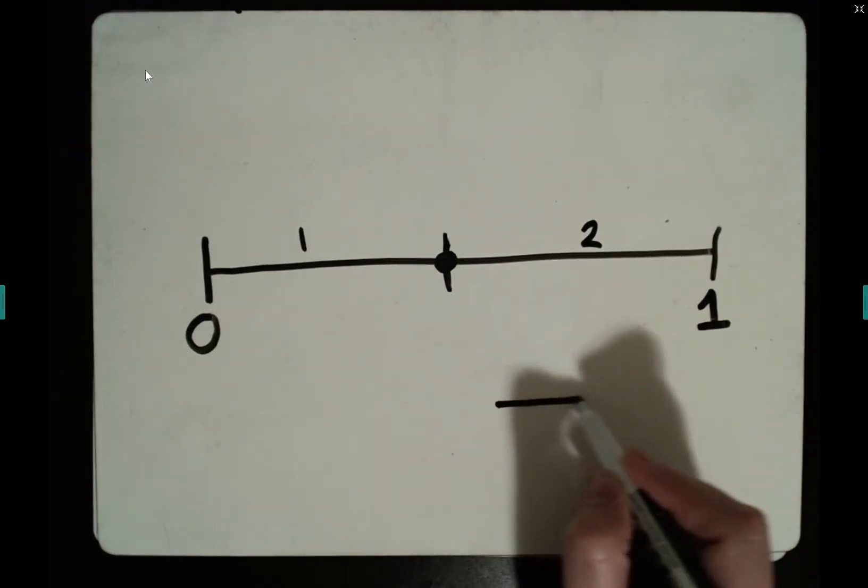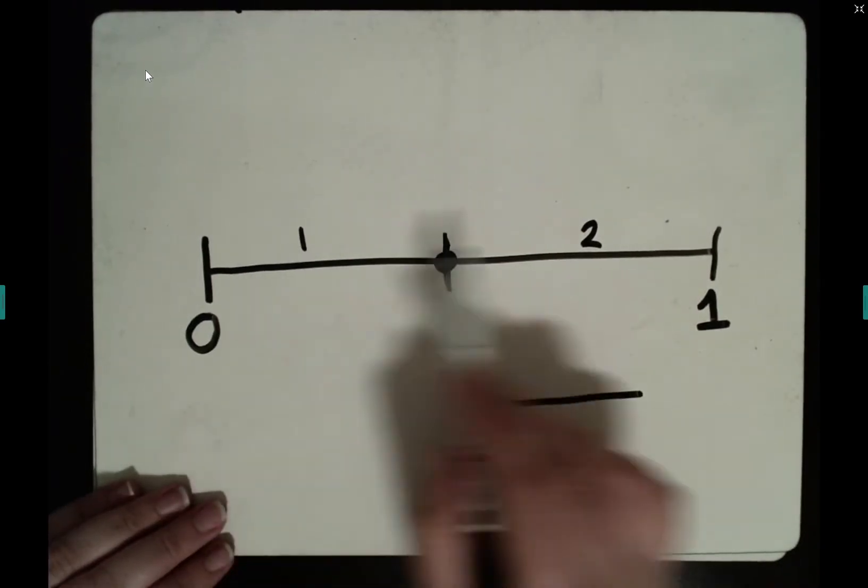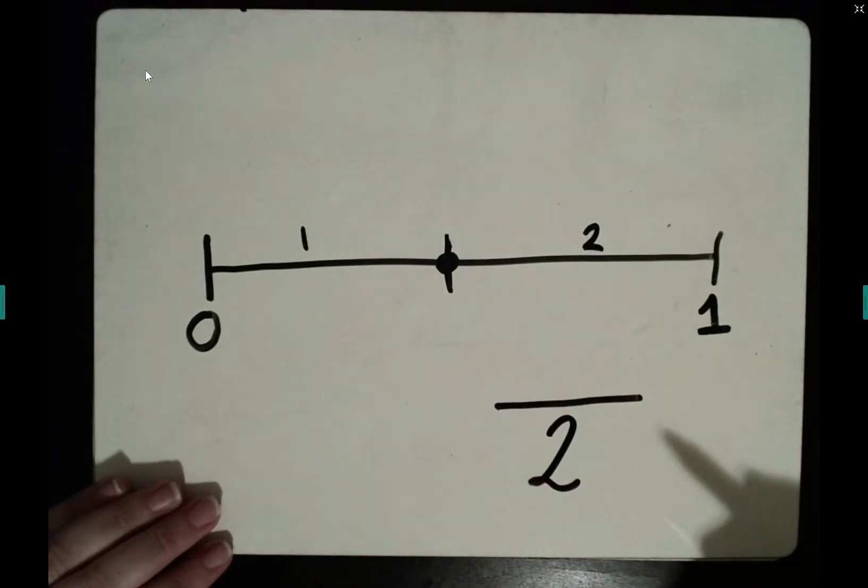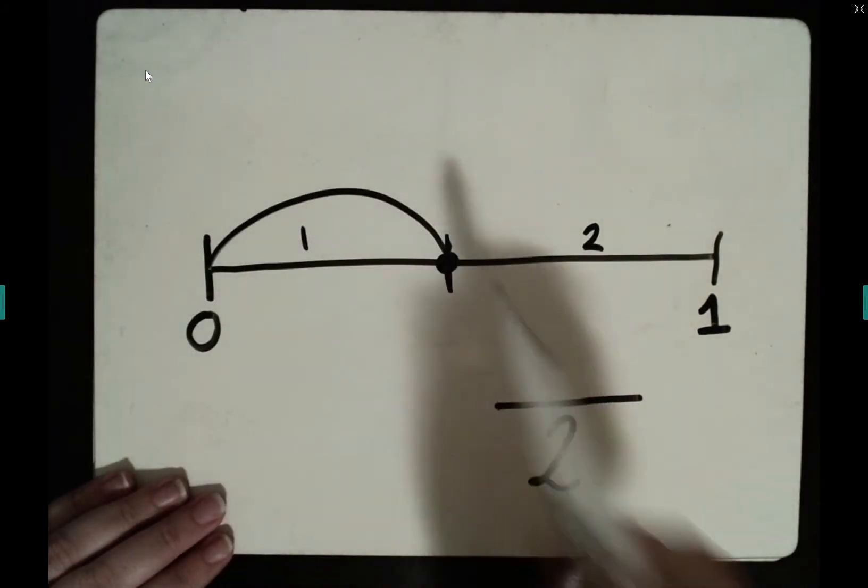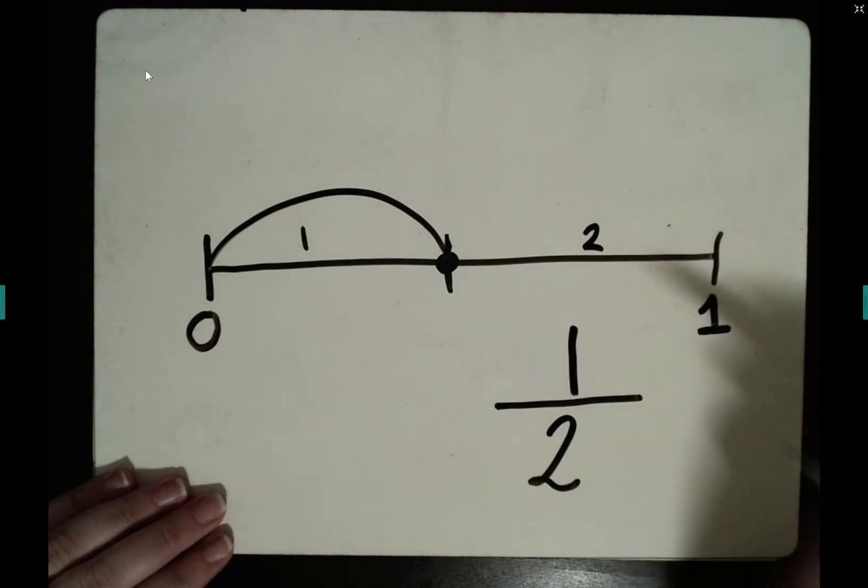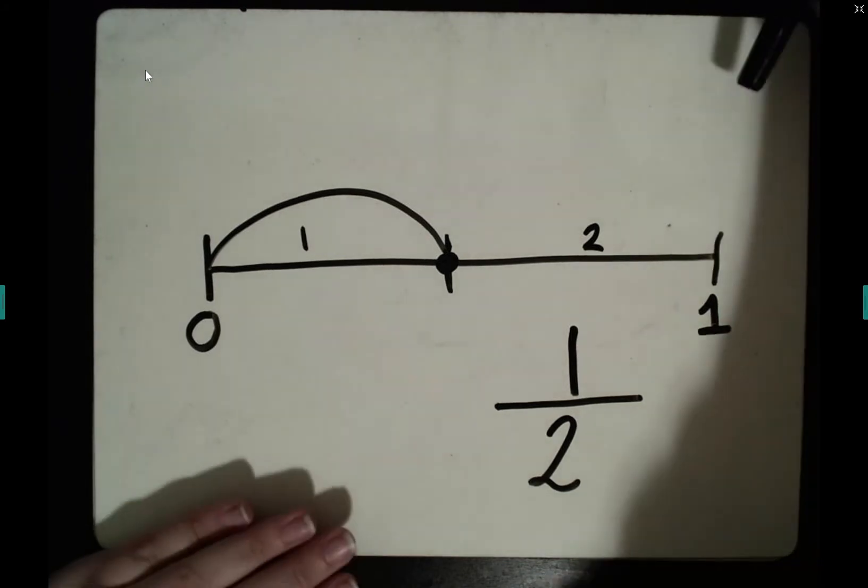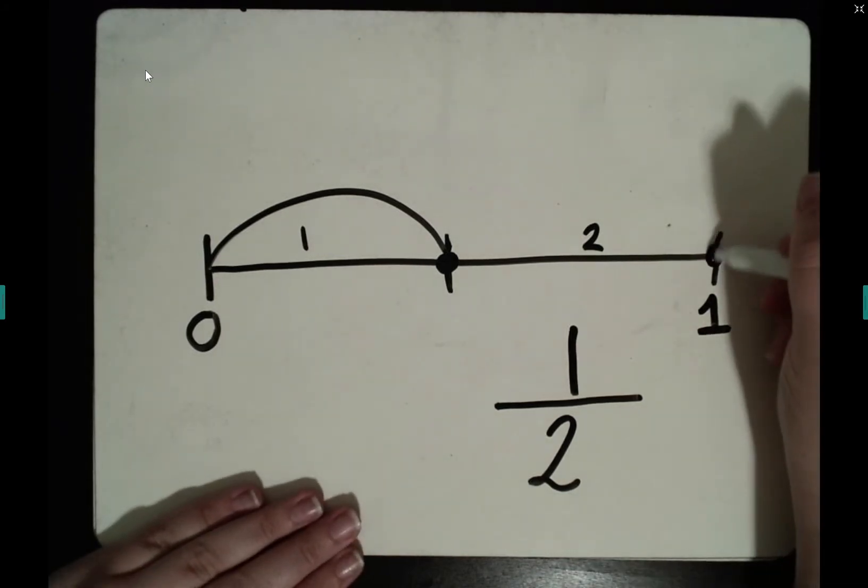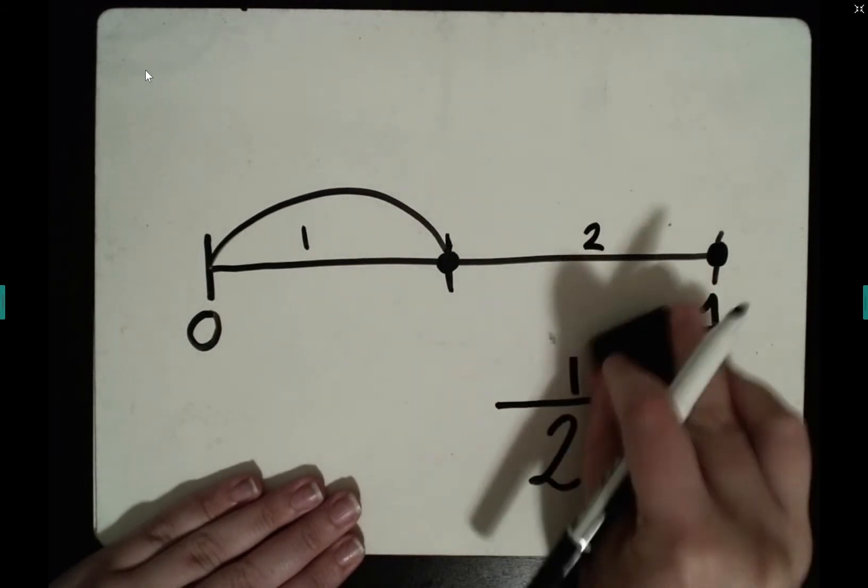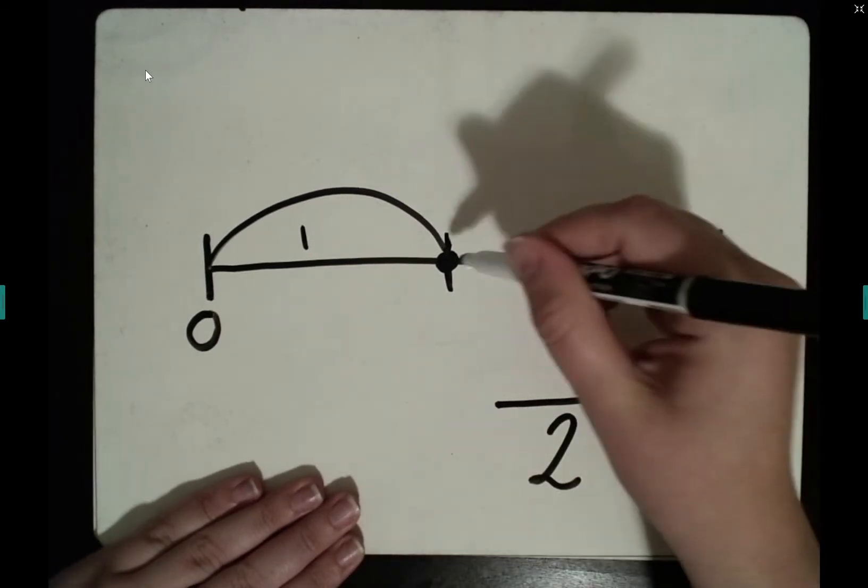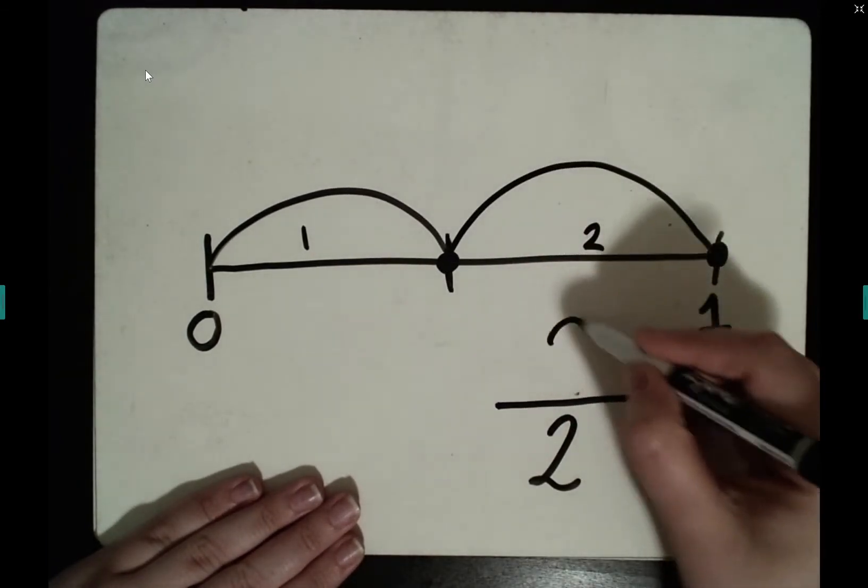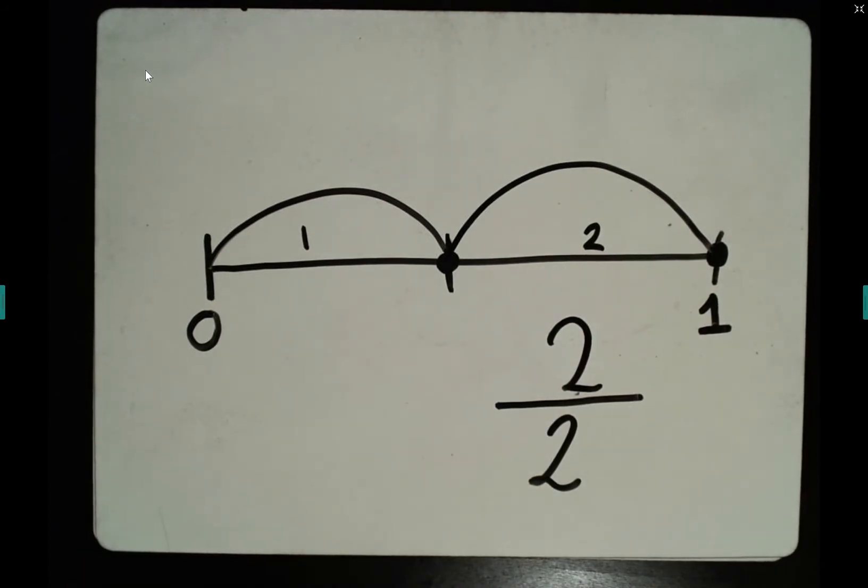So again, our denominator, there are two equal parts on this length model. You've made it one. So you've made it half of the way there. If you made it to here, you have two halves, which means you've made it all the way to your destination.